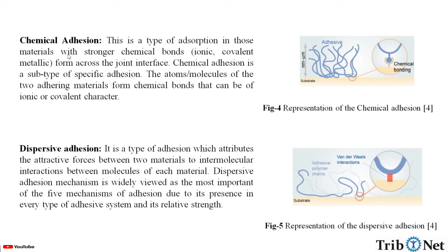Chemical adhesion: this is a type of adsorption in which materials form stronger chemical bonds — ionic, covalent, or metallic bonds — across the joint interface. Chemical adhesion is a subtype of specific adhesion. The atoms or molecules of the two adhering materials form chemical bonds that can be of ionic or covalent character. Here we can see the representation of chemical adhesion.